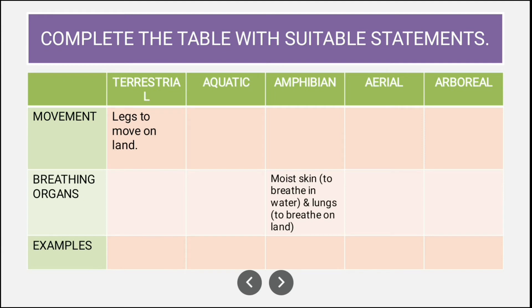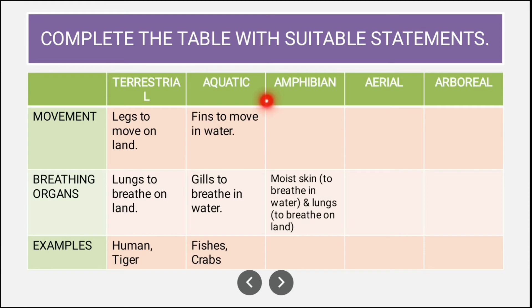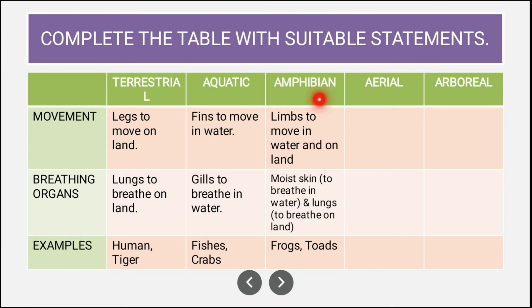For aquatic animals: they have fins to move in water, and gills to breathe in water. Examples are fishes and crabs. For amphibians: they have limbs to move in water and on land.